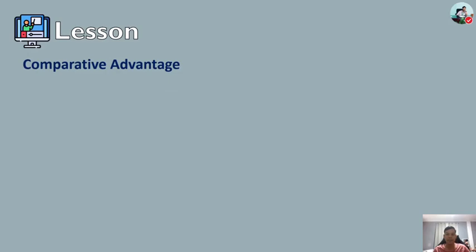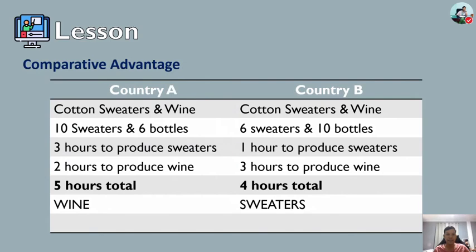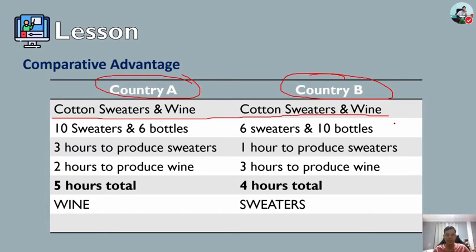Let's take a simple example. Country A and Country B both produce cotton sweaters and wine. Country A produces 10 sweaters and 6 bottles of wine a year, while Country B produces 6 sweaters and 10 bottles a year. Both can produce a total of 16 units each year.